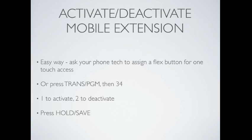To activate or deactivate Mobile Extension from your desk phone, the easiest way is to ask your phone tech to assign a flex button for one-touch access. If you don't have that available, you can press Trans/Program, then 34, then 1 to activate or 2 to deactivate, then press Hold/Save.